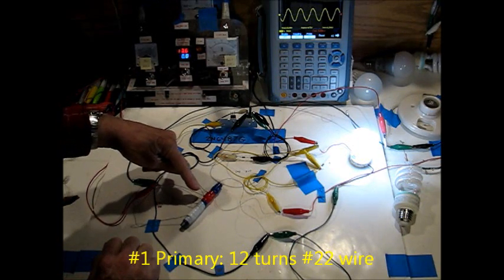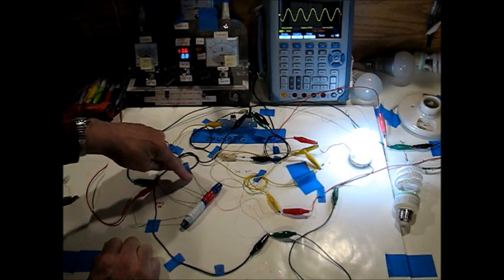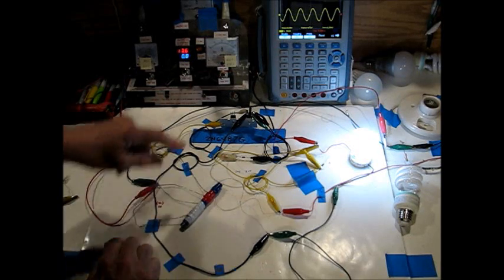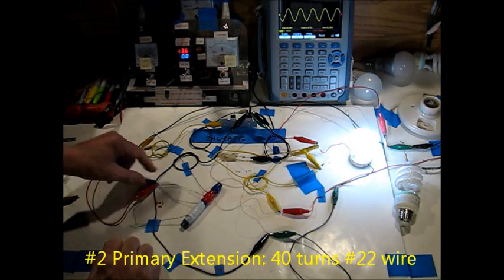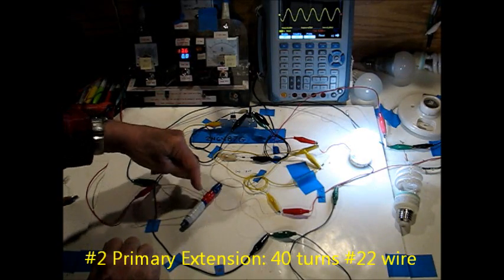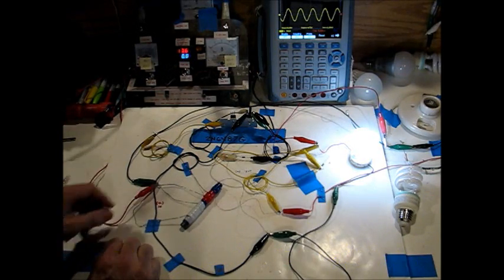the first two winds on either end of the secondary, I have a number 28 wire soldered to it because it's bigger and it doesn't break off as easy. And then what I have here is 12 turns of 22 gauge. And I have 40 turns of 22 gauge.